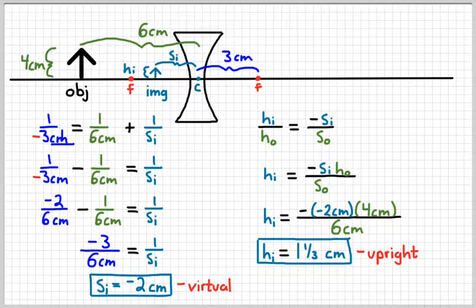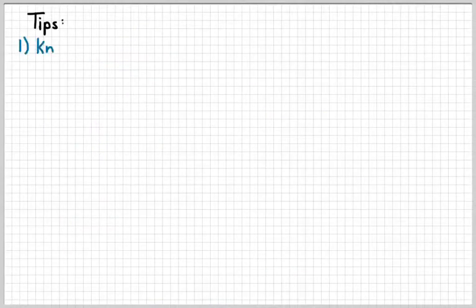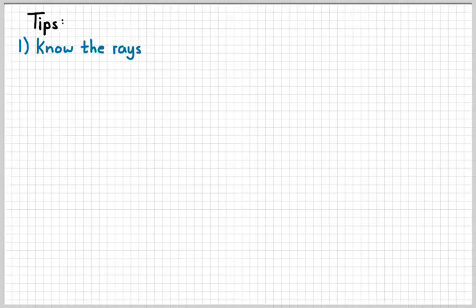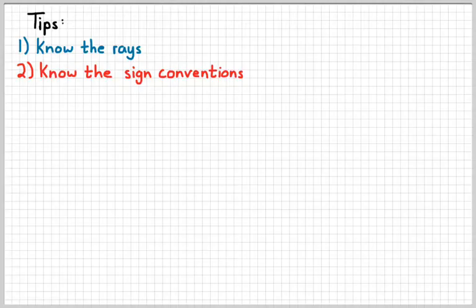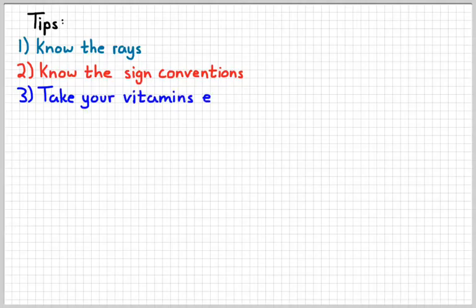So a lot of similarities between lenses and mirrors like we learned last week. So a couple of tips for you. Make sure you know the rays that we can draw. That's going to come from practice. Make sure we know the sign conventions. When the focus is negative. And things like that. And lastly and most important. Be sure to take your vitamins every day. I'm going to go take my vitamins. I'll see you next time.